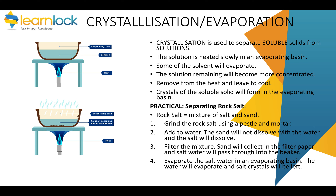You can use filtration and crystallisation to separate rock salt, which is a mixture of salt and sand that occurs naturally. First, grind it with a pestle and mortar to increase surface area. Then add water — the sand will not dissolve, but the salt will. Filter the mixture: the sand will collect in the filter paper as the residue, and the salt water will pass through. Finally, evaporate the salt water; the water evaporates into the air, leaving behind salt crystals.